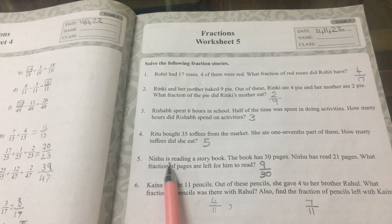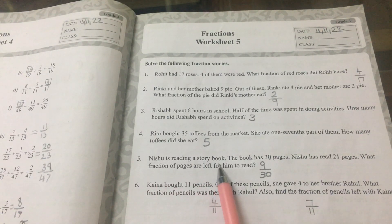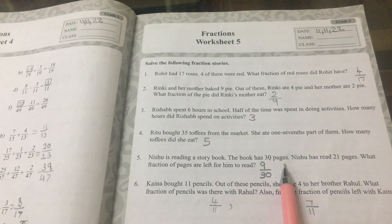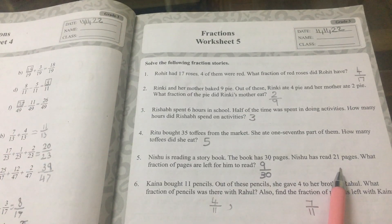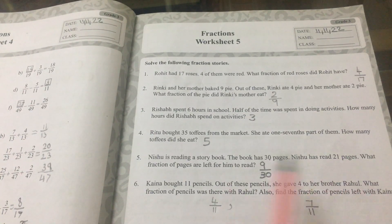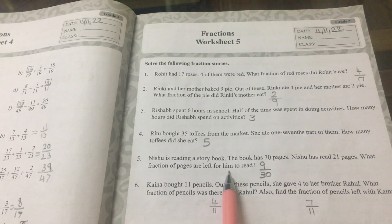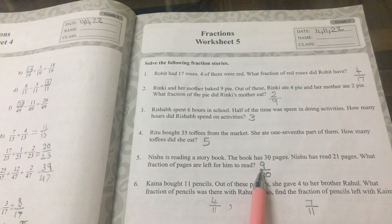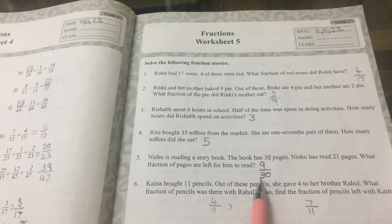Number 5. Nishu is reading a story book. The book has 30 pages. Nishu has read 21 pages. What fraction of the pages are left for him to read? The answer is equal to 9 thirtieths.